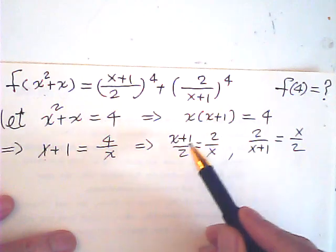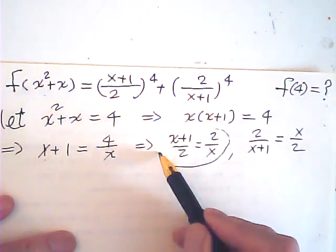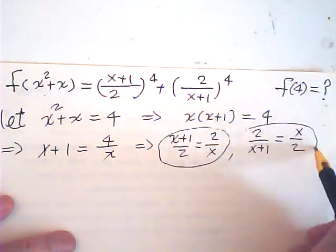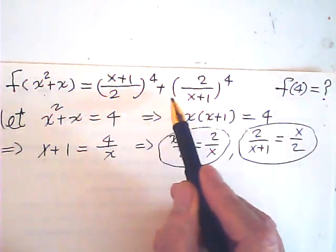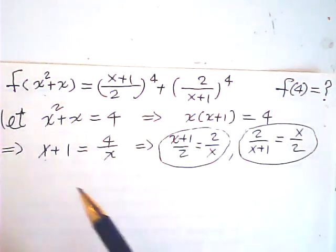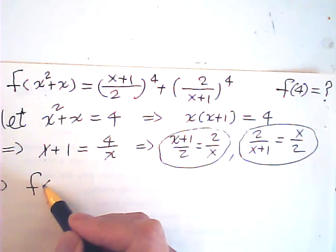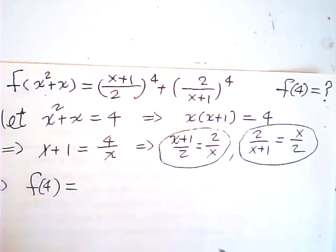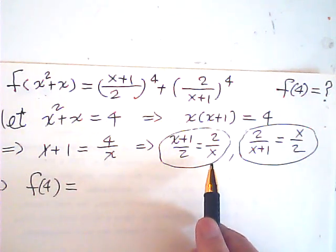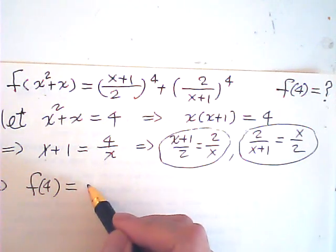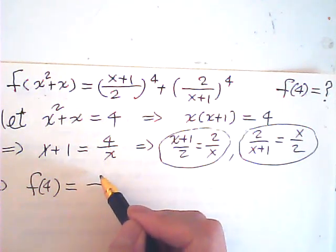So once I have these two, this and that, I just plug them into the equation. So therefore f of 4 is equal to this 4th power. So this is equal to 16.